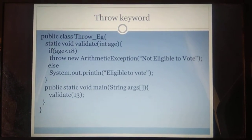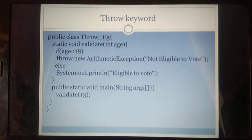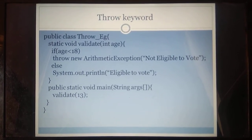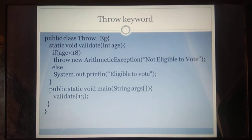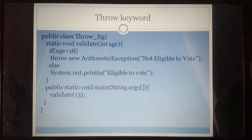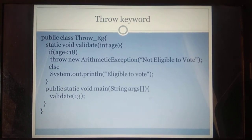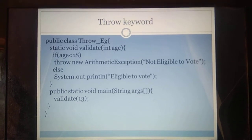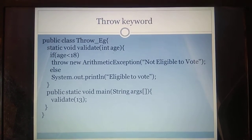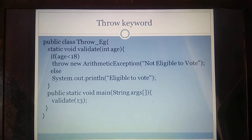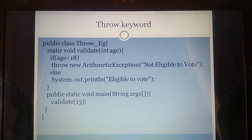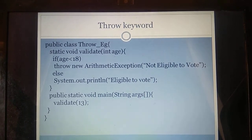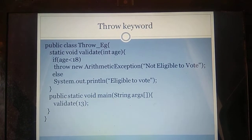For the throw keyword, we are creating a class named throw_example. Inside that, we are creating a parameterized static method called validate, which takes an int parameter named age. Inside the method, we have a conditional statement: if age is less than 18, it will throw an exception. If age is greater than 18, it will print 'eligible to vote'.